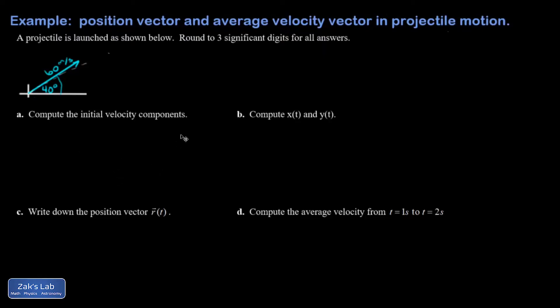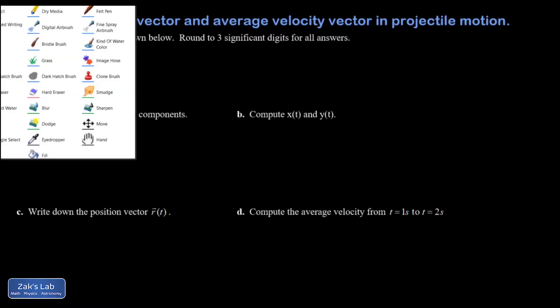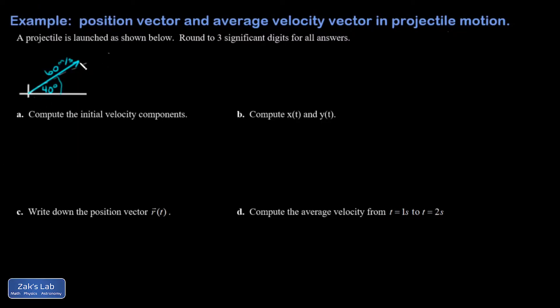Okay, on this example we get really deep into the formal position and velocity vectors during a projectile flight. So it's a way of combining two major ideas. We have a projectile flight that looks something like this.